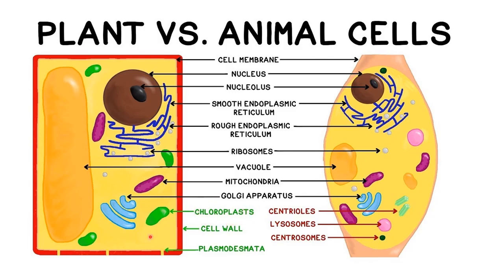Chloroplasts are only present in plants because they are required for photosynthesis. Plants do photosynthesis and chloroplasts provide a green pigment known as chlorophyll — they are part of the plastids. Animal cells do not have chloroplasts because they do not perform photosynthesis as they are heterotrophic. Cell wall is again a feature of plant cells only — animal cells do not have a cell wall. We are going to learn about cell wall and cell membrane in detail in the upcoming slides.